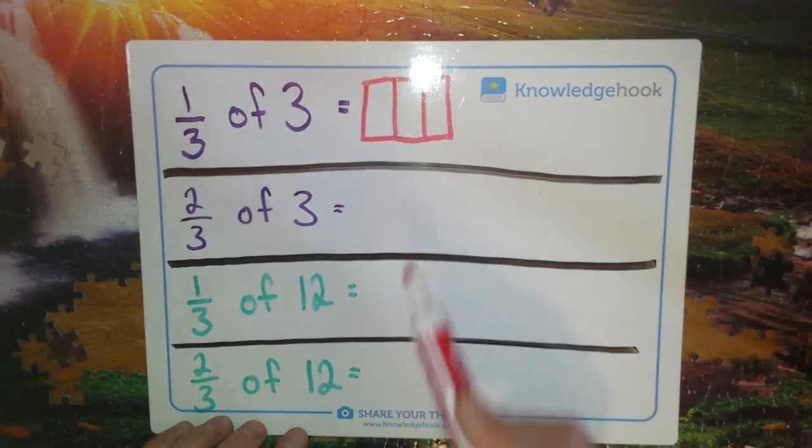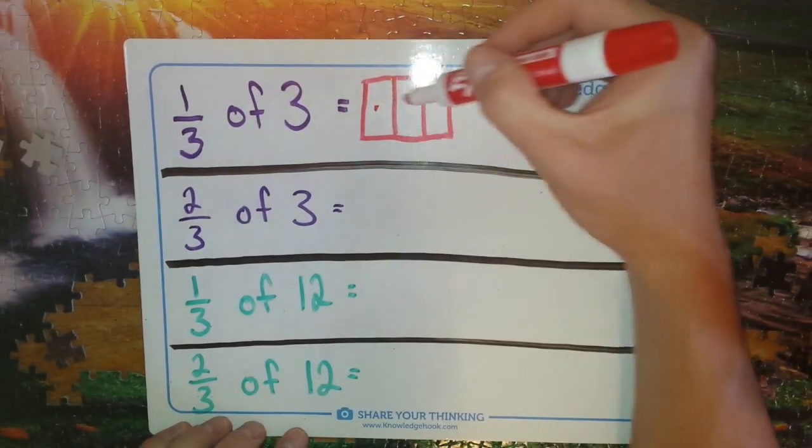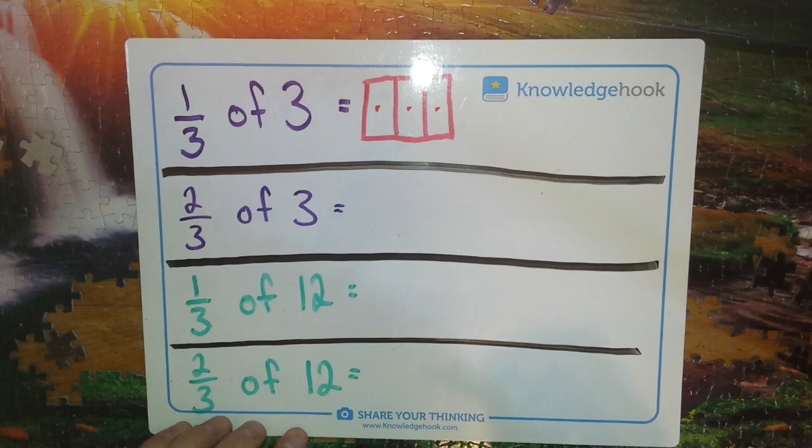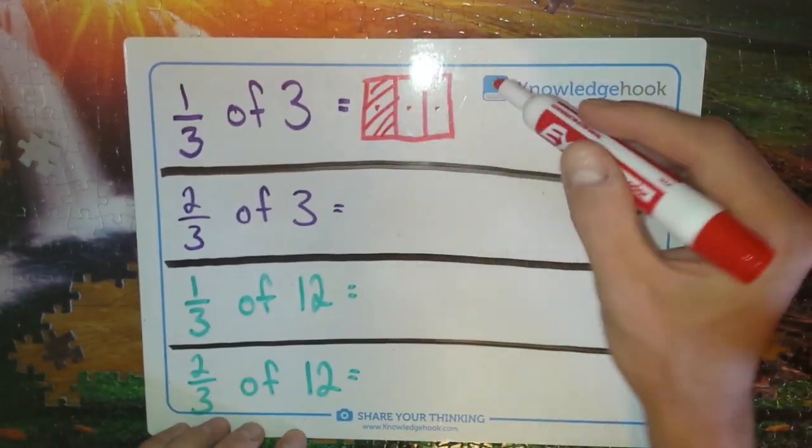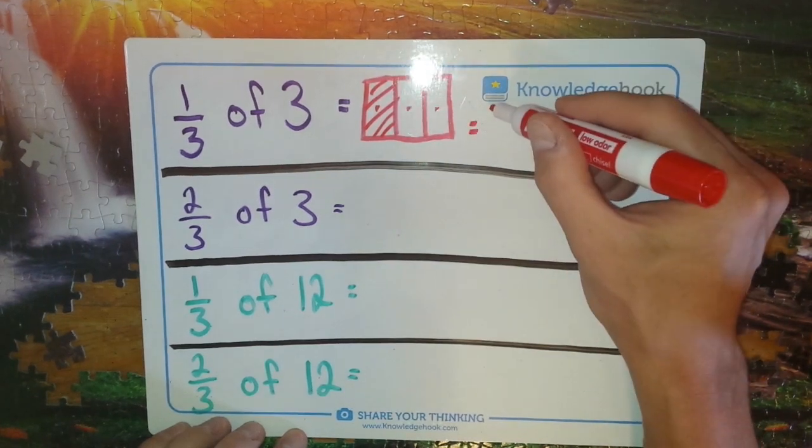So if I had, say, three marbles and three people to share them - one, two, three - and if I had one third of those, then I have one group, which means in this case, one.